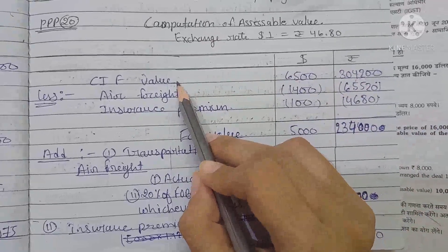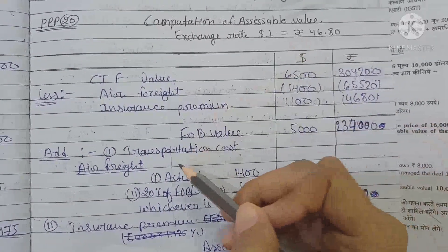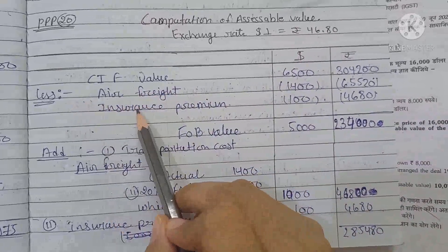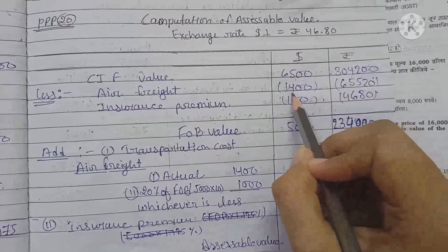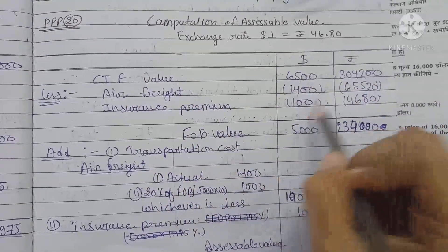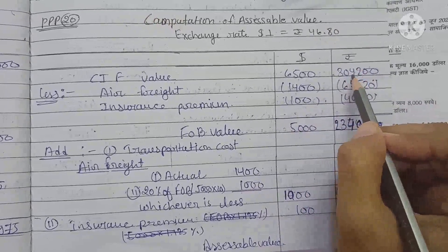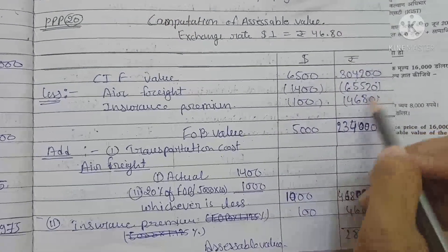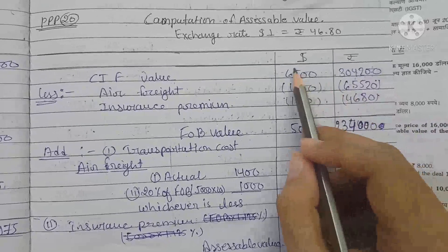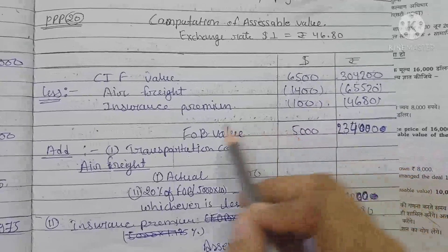Since CIF value is the assessable value, we need to work back to FOB. We subtract air freight of $1,400 multiplied by 46.8 = ₹65,520, and insurance of $100 multiplied by 46.8 = ₹4,680. So ₹3,04,200 minus ₹65,520 minus ₹4,680 gives us FOB value. From $6,500 minus $1,400 minus $100 = $5,000, which is the FOB value.